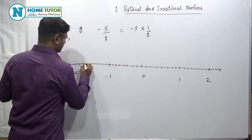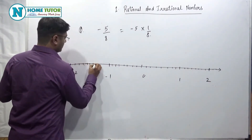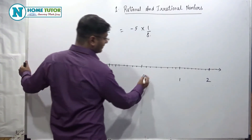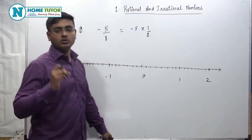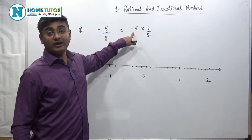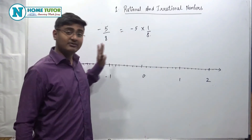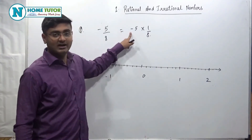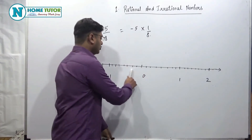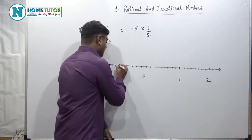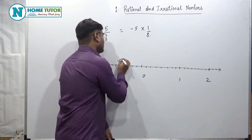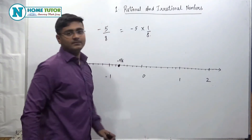After zero, we check which point we need. We need the 5th point. Since the number is negative, we go in the left direction. The 5th point in the left direction is: 1, 2, 3, 4, 5. So this point is minus 5 by 8. That's it.